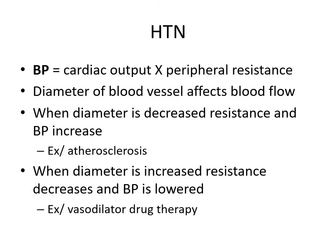Blood pressure is cardiac output times peripheral resistance, and the diameter of the blood vessel affects blood flow. When the diameter is decreased, resistance and blood pressure increases, as with atherosclerosis. When the diameter is increased, resistance decreases and blood pressure is lowered, for example with vasodilator drug therapy. This is because water in the blood is a non-compressible fluid, so changing the diameter of the vessel is what changes the pressure.